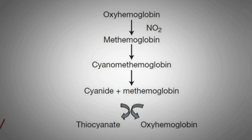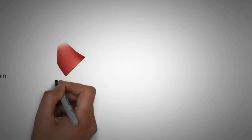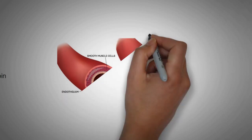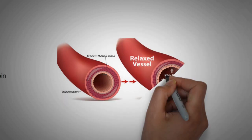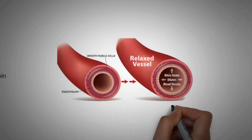When sodium nitrate is administered, it acts by oxidizing hemoglobin to methemoglobin, which also has an affinity to cyanide. So cyanide will move from cytochrome a3 to methemoglobin, leaving cytochrome a3 free to resume normal cell functions. The reduction of nitrate by hemoglobin results in the formation of nitric oxide, which is a very powerful vasodilator.